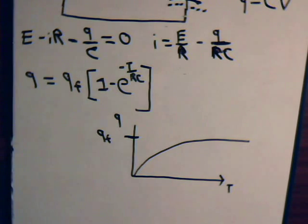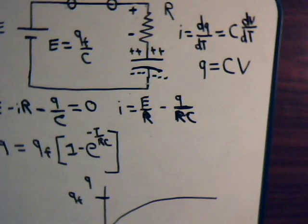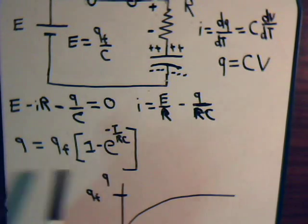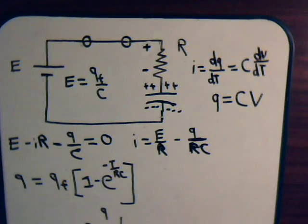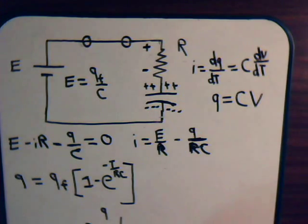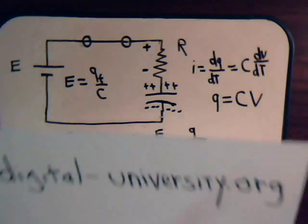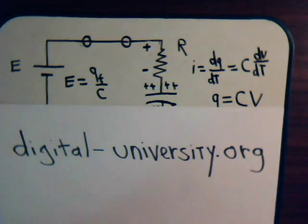That's it for this video. We showed that using our simple circuit equation, we can derive an equation for the amount of charge on the capacitor at any time. In the next video, we'll consider what happens when a fully charged capacitor discharges — capacitors can hold their charge, so if we throw a switch to allow discharge, what does that discharge current look like? This was the 61st video in our electrical circuit series and the playlist is at digital-university.org.